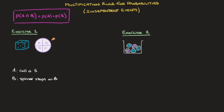These two events, A and B, are independent events. One way to see that is to realize that no matter what number we obtain when we roll the die, it won't have any impact on the outcome of spinning this spinner. Whether we roll a 1, 2, 3, 4, 5, or 6, it won't affect the likelihood of this spinner stopping on the letter B. Consequently, these two events are independent. So if we want to calculate the probability of both A and B occurring, we can use the formula: P(A ∩ B) equals the probability of A times the probability of B.